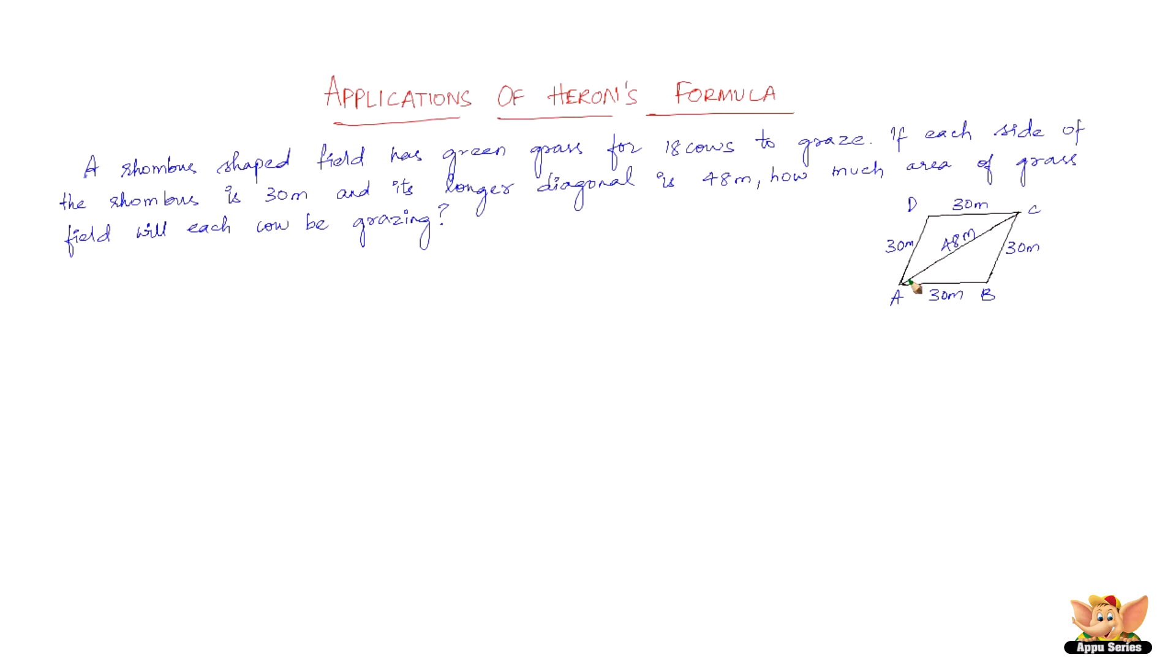ABC and ACD. And we've got the measurements of all the three sides: 30, 30, 48, 30, 30, 48. All we need is the perimeter. So we know how to find it out. S equals A plus B plus C by 2. So we have 30 plus 48 plus 30 by 2, which is 54 meters.